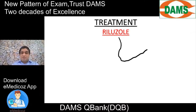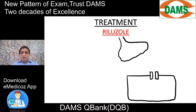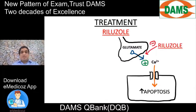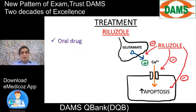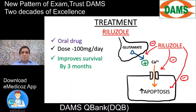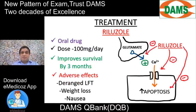Treatment: Riluzole is a drug used in ALS. Glutamate as an excitatory neurotransmitter causes influx of calcium into adjacent neurons, accelerating apoptosis in degenerating neurons. Riluzole inhibits the release of glutamate, inhibits calcium influx, and inhibits apoptosis. It is an oral drug, dose approximately 100 mg per day. It is not a magic bullet — it improves survival by only about 3 months. Adverse effects include deranged liver function tests, weight loss, and nausea.